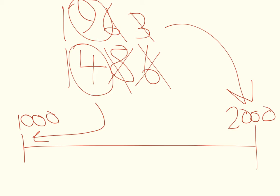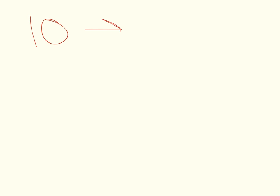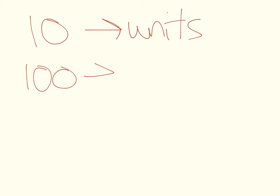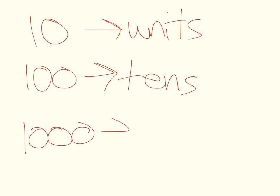I'm sure you're getting the picture now. So, if you're rounding to the nearest multiple of ten, look at the units. If you're rounding to the nearest multiple of one hundred, look at the tens. If you're rounding to the nearest multiple of one thousand, you're going to look at the hundreds column.